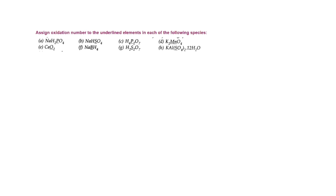We need to calculate the oxidation states because if we need to balance the reaction, then we need to solve the electronic concept. The first question is given here: NaH₂PO₄, where the underlined element is phosphorus. This means that we need to calculate its oxidation state.